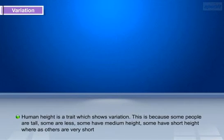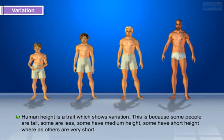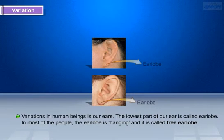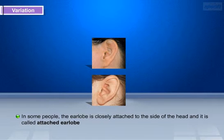For example, human height is a trait which shows variation. Some people are tall, some are less tall, some have medium height, some have short height, while others are very short. Another example of variation in human beings is ears. The lowest part of our ear is called the ear lobe. In most people the ear lobe is hanging and is called a free ear lobe, while in some people the ear lobe is closely attached to the side of the head and is called an attached ear lobe.